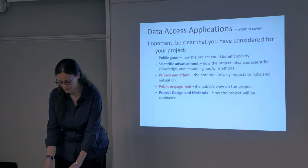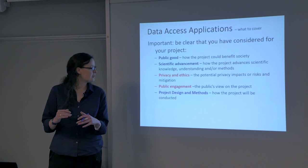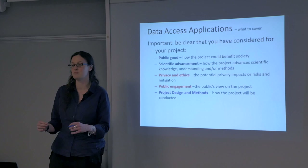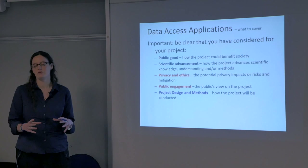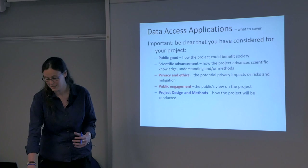The things you want to cover in an access application are similar to the Data Protection Act: public good and scientific advancement — why is your project a good thing to do, why should they give you data? Then privacy and ethics relating to data protection, and public engagement — what's the public's view on why this might be a good or bad thing? And finally, your project design and methods: how is your project going to be conducted and who's going to be involved? As Cathy said, list everyone who's going to be involved because you're going to be asked again and again.